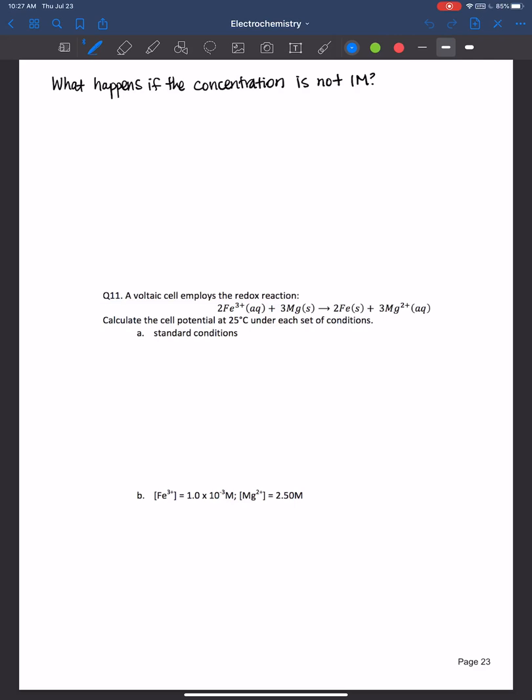Hello everyone, welcome back. In the previous two videos, we looked at the relationship between Gibbs free energy, the cell potential, and the equilibrium constant. And now we're going to look at the cell potential if we're not at standard condition, so for example, if the concentration is not one molar.